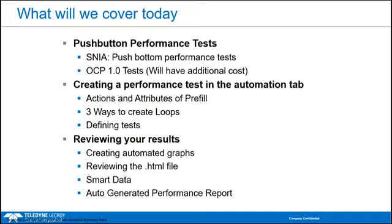In this class, we're going to cover push-button performance tests such as SNIA and OCP 1.0. We're also going to create a performance test in the Automation tab. We'll go over the actions and attributes of pre-fill, three ways to create loops, defining tests, we'll talk about MI, and then we'll show reviewing your results, creating automated graphs, reviewing the HTML file, getting smart data, and your auto-generated performance report.